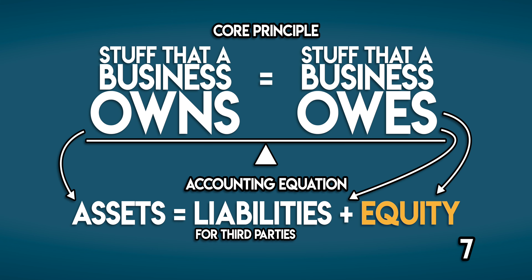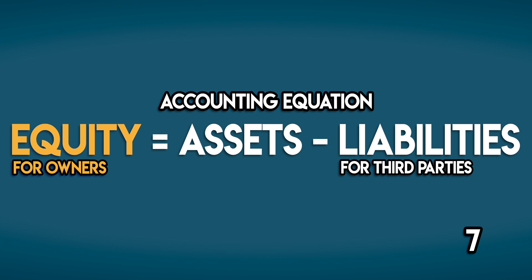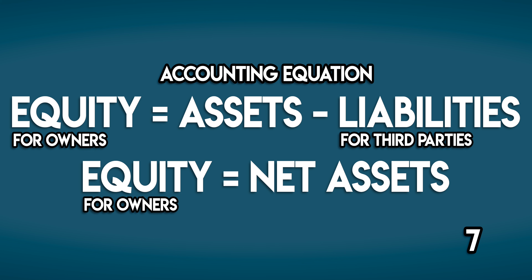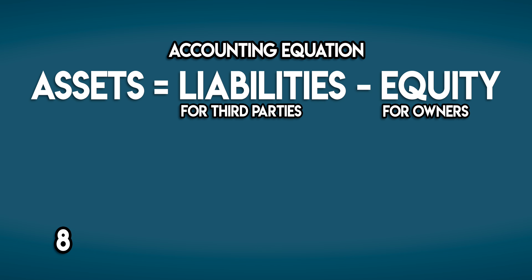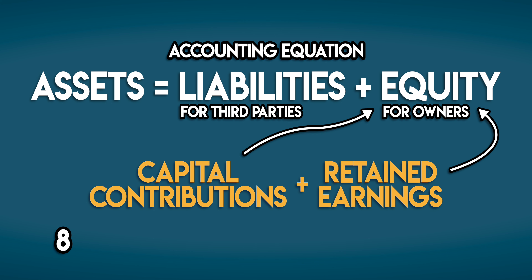Equity is the stuff that a business owes to its owners. If we rearrange the accounting equation, we can see that equity is equal to assets minus liabilities. Another name for this is net assets. So equity is the owner's claim on the net assets of a business. There are two main components to equity: capital contributions and retained earnings.